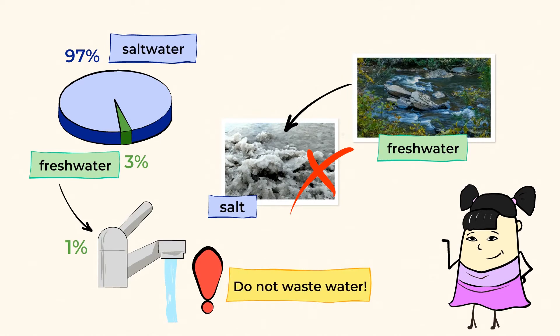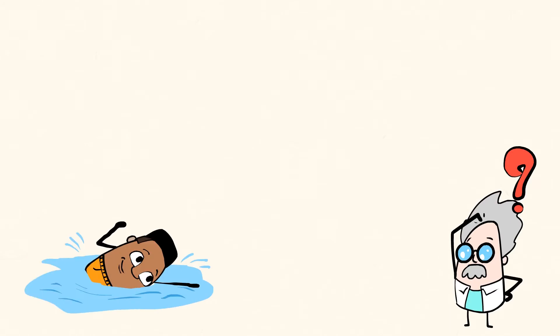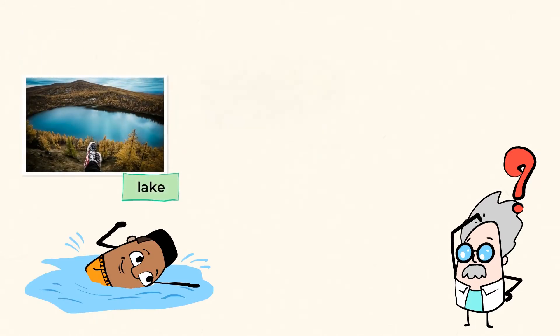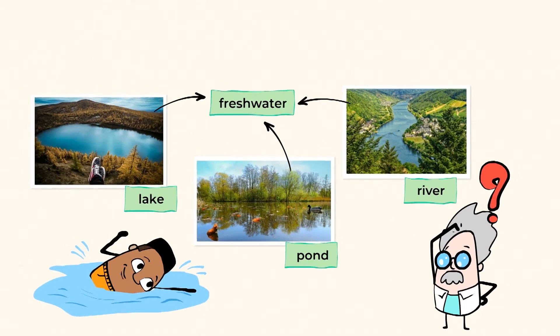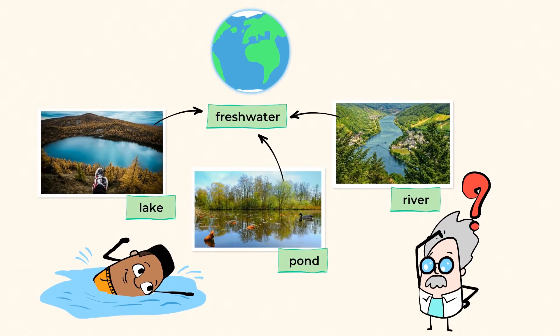Now, you can find fresh water in many different places. Can you think of any? If you've ever taken a swim in a lake, a pond, or a river, you were swimming in fresh water. There are rivers and lakes all over our Earth, but they still make up a very small amount of the total water.